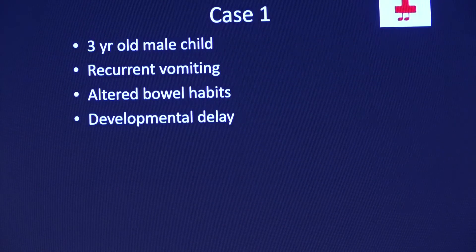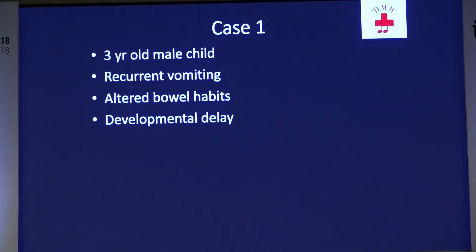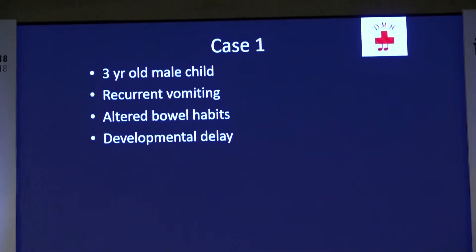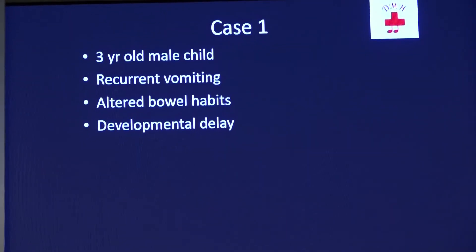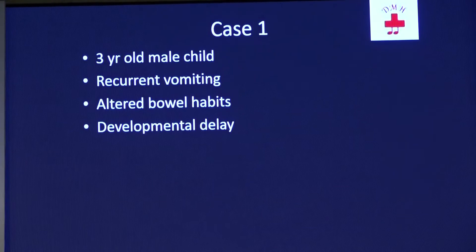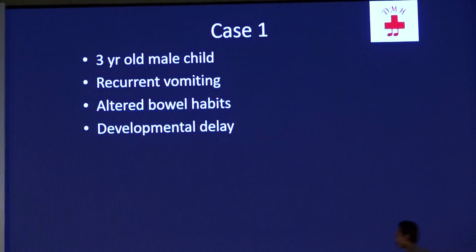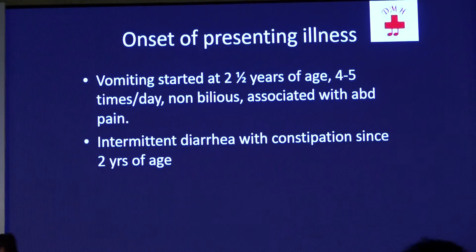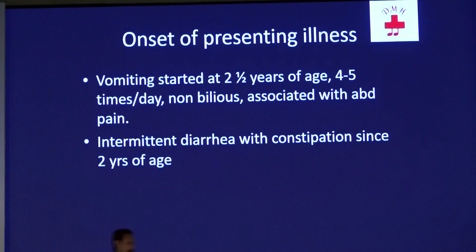Good afternoon everyone. I'm presenting a case of a three-year-old male child who presented with complaints of recurrent vomiting, altered bowel habits, and developmental delay. The child started developing vomiting at two and a half years of age, which was around four to five episodes per day, non-bilious, associated with abdominal pain.